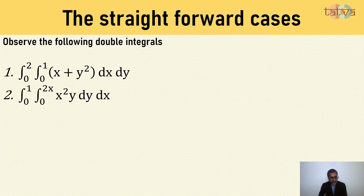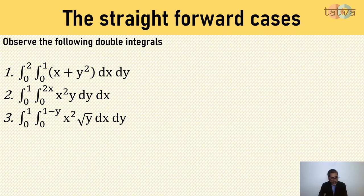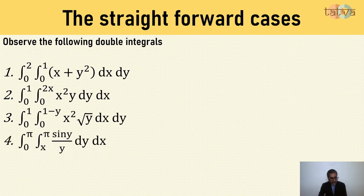This is another problem where we do not have to think of polar. Because if you look at the y limits, they are from 0 to 2x and the x limits are from 0 to 1. If you trace, you will find that a triangle is formed. And a triangle definitely is not a polar curve. Then this is another instance where we do not require any transformation to polar coordinates, because the region will again represent a triangle.